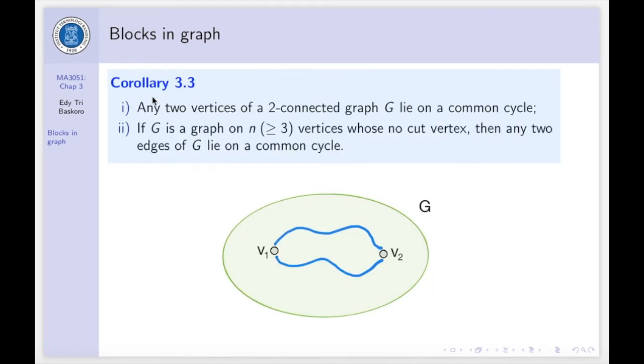Now, we have the following Corollary 3.3. We have two statements here. First, any two vertices of a two connected graph G lie on a common cycle. Why is that? Because if G is a two connected graph, then by theorem 3.2, we have for any two vertices, let's say V1 and V2 in G, then we have at least two internally disjoint paths. For example, this is the path. Then, these two paths will form a cycle containing V1 and V2.